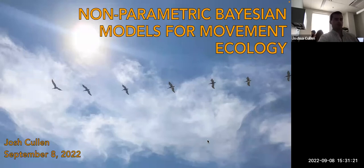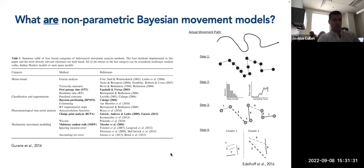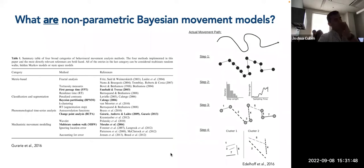I'm going to be covering non-parametric Bayesian models for movement ecology, and this includes a couple of different models, more than just one. Returning back to this table and figure I showed earlier, I'm going to use this to characterize what these models are doing. These are models I helped develop when I was at the University of Florida with Dennis Valle and Rob Fletcher, and there are two different types of these models.